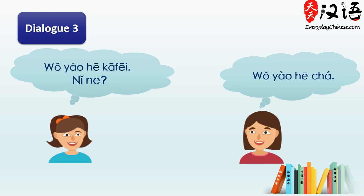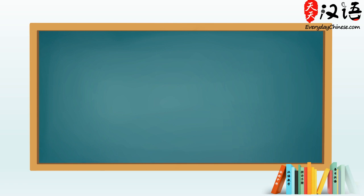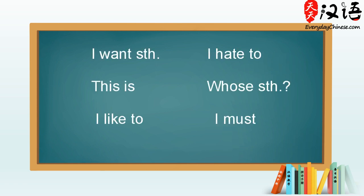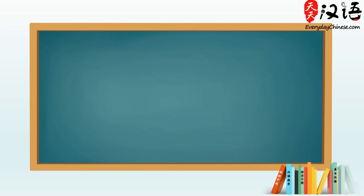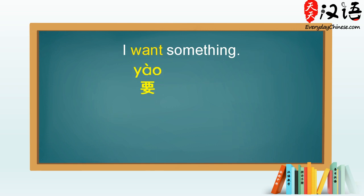Like in any other languages, there are some sentence patterns which seem very useful and always come in handy. One example is to say that I want something. To want, in Chinese, it's 要. So, I want is 我要.